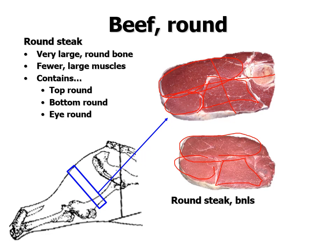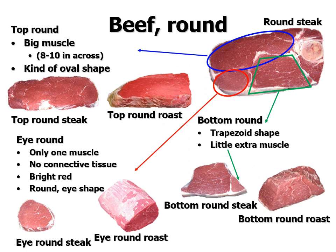Those three round muscles can become separate cuts. The top round is a big, eight-to-ten-inch oval-shaped muscle, one solid piece, available as a roast or a steak — a steak is typically less than an inch thick, while a roast should be more than two inches thick.